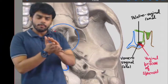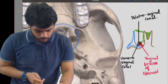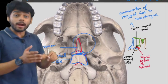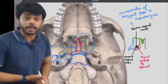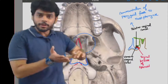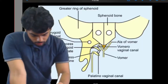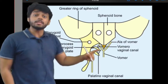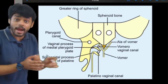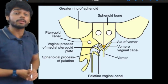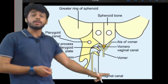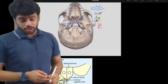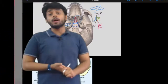The palatinovaginal canal forms the communication between the pterygoid fossa and nasopharynx. In another diagram showing the sphenoid bone, you can see the pterygoid process, the vaginal process of the sphenoid bone, and the sphenoid process of the palatine bone. Inferiorly is the palatinovaginal canal and superiorly is the vomerovaginal canal. These were the structures of the median area of the middle part of Norma Basalis: the vomer, pharyngeal tubercle, and the palatinovaginal and vomerovaginal canals.